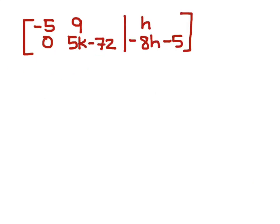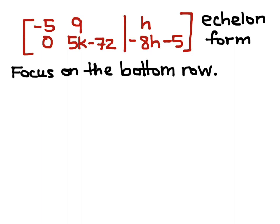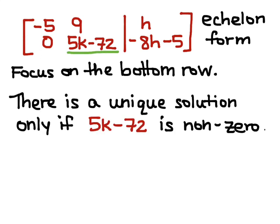Now, this is my new matrix and it is in echelon form. I want to focus on the bottom row, and I know that there is a unique solution only if the entry 5k minus 72 is not equal to 0.